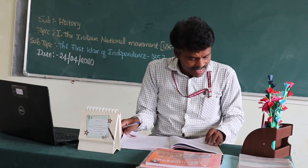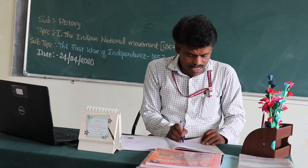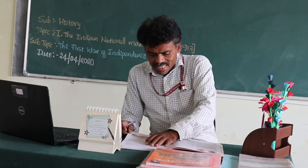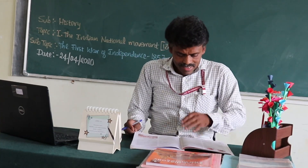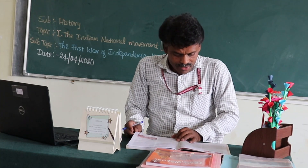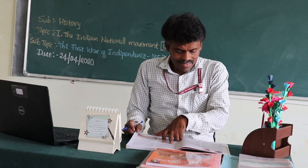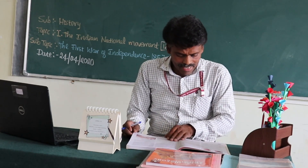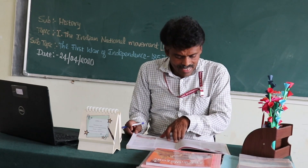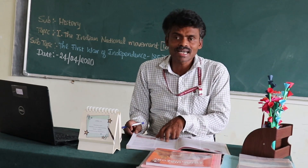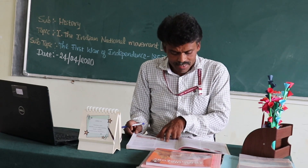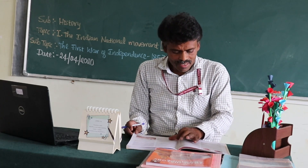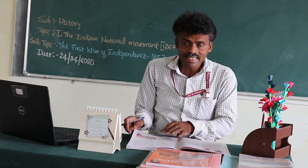The eighteenth question: Give an example to show how the British exploited the resources of India. Come to page number 13. Under the heading 'Economic Causes,' under serial number one, skip two lines and start from the third line: 'India was forced to export...' Mark that full paragraph till the word 'Britain' — five lines. That is the eighteenth answer.